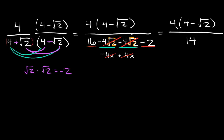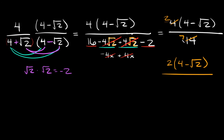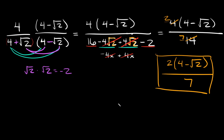Now we can reduce. On top we have 4 times (4 minus root 2), and on the bottom we have 14. Since 4 over 14 reduces to 2 over 7, on top we'll have 2 times (4 minus root 2), and on the bottom just 7. So the final answer is 2(4 minus root 2) over 7.